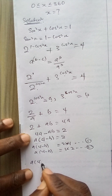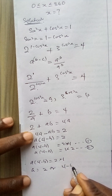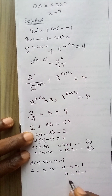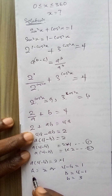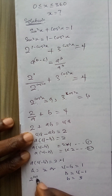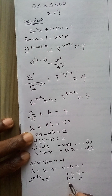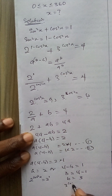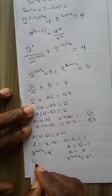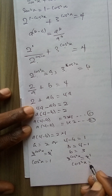Solving equation 1: a(4 minus b) equals 2 times 1, so a equals 2 and 4 minus b equals 1, giving b equals 3. Remembering that a is 2 to the power cos squared x, we have 2 to the power cos squared x equals 2 to the power 1. And since b is 3 to the power cos squared x, we get 3 to the power cos squared x equals 3 to the power 1. In both cases, cos squared x equals 1.